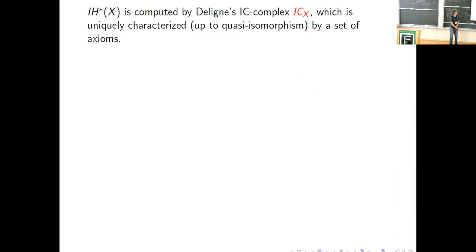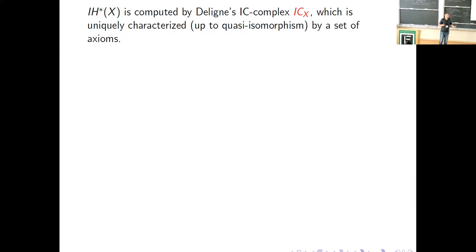Intersection cohomology is computed by what's called the IC complex — a complex of sheaves with vector space coefficients. It is uniquely characterized in the derived category of constructible complexes by a set of axioms. In simple terms, it is an extension of the constant sheaf from the regular locus to the whole space in a suitable sense that will actually satisfy the Kähler package — the optimal such extension that restores the Kähler package.